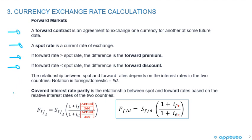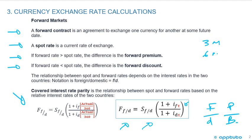The formula for covered interest rate parity — the arbitrage relationship — shows a relationship between the spot rate and the forward rate based on the relative interest rates of the two countries. We express it as F over D, foreign over domestic, or price over base. The forward rate equals the spot rate times one plus the interest rate in the price currency, divided by one plus the interest rate in the base currency. We must introduce the concept of time: if the forward is less than a year, we multiply the interest rate by actual days divided by 360. For example, a 90-day forward uses 90 over 360, which equals 0.25.